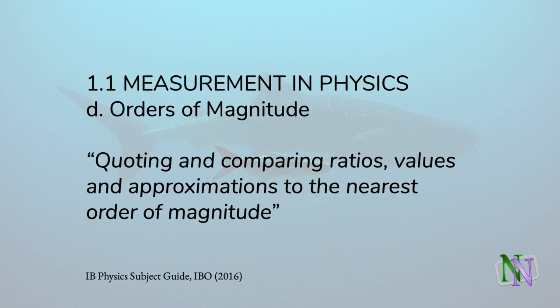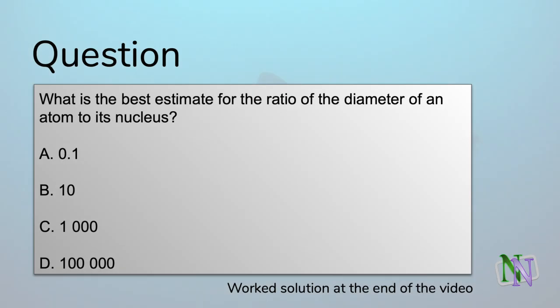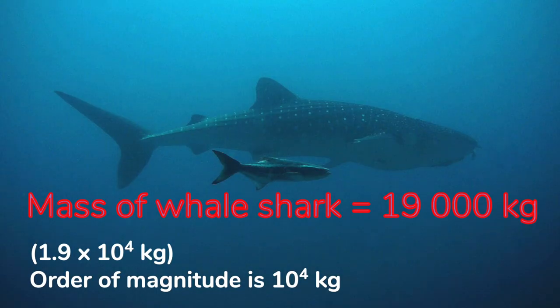Here is the statement from the IB Physics guide. And here is a typical multiple-choice question on this topic: what is the best estimate for the ratio of the diameter of an atom to its nucleus? You should be able to answer this by the end of the video.